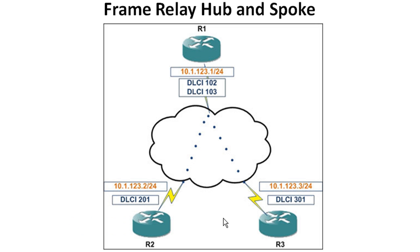So you end up with fractured routing. There are ways to get around this in the routing protocols, but what you're going to want to do is start using sub-interfaces and make all these point-to-point connections. We'll show that in a future lesson, but I want to show you this basic configuration so you have something to compare it with when we start configuring sub-interfaces.